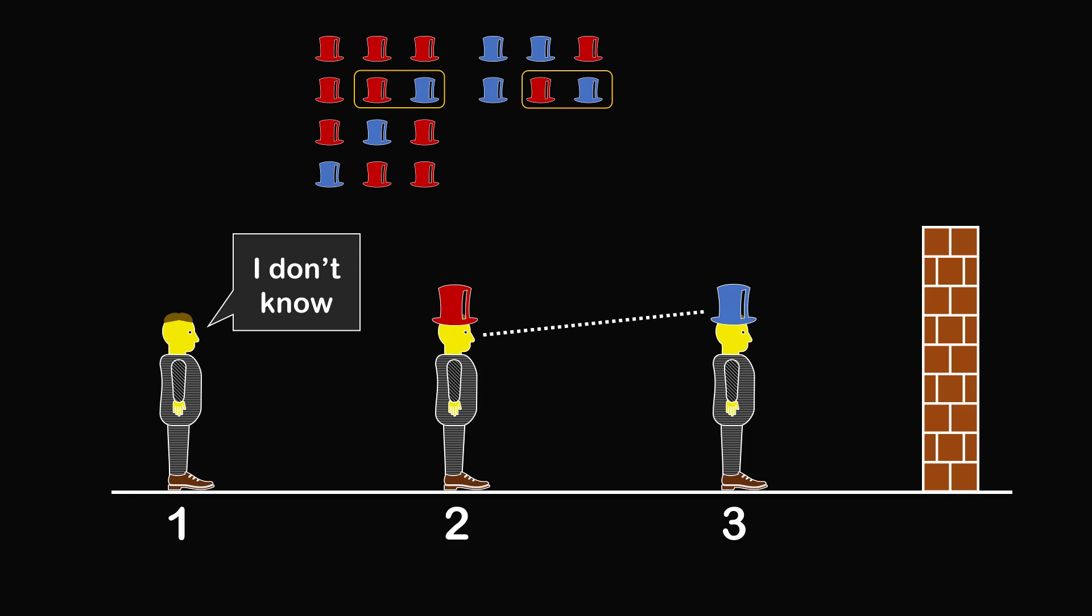If prisoner 3 were wearing a blue hat and prisoner 1 had said, I don't know, prisoner 2 would have been able to correctly reason that I am wearing a red hat and I know my hat color. But we know that prisoner 2 replied, I don't know. So these 2 cases are also not possible.